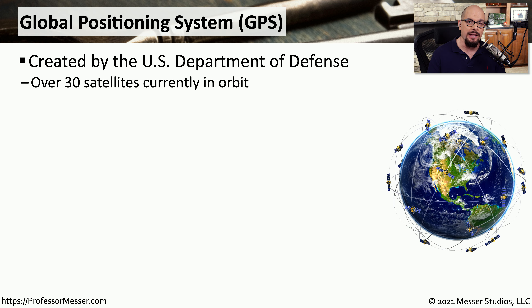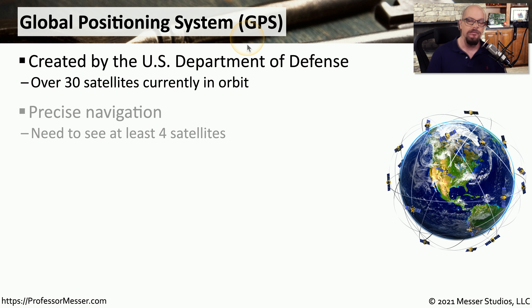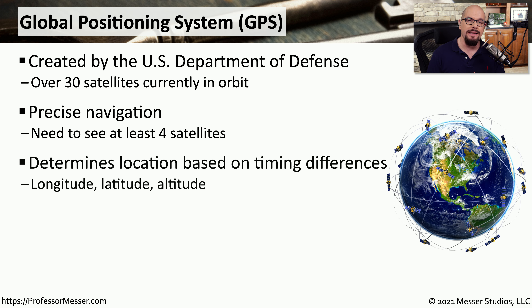If you've used the map functionality on your mobile phone, then you've taken advantage of GPS, or the Global Positioning System. This is a technology created by the US Department of Defense, and there are about 30 satellites in orbit providing this GPS functionality. It provides very precise location information for your mobile device. You would need to see at least four satellites to use this GPS capability, so it's often easiest to use near a window or outside. GPS determines where you are based on timing differences from each of these different satellites, using those differences to determine your latitude, longitude, and altitude.